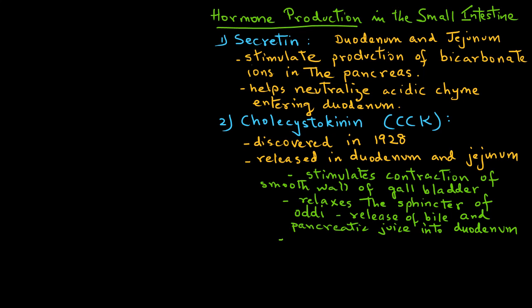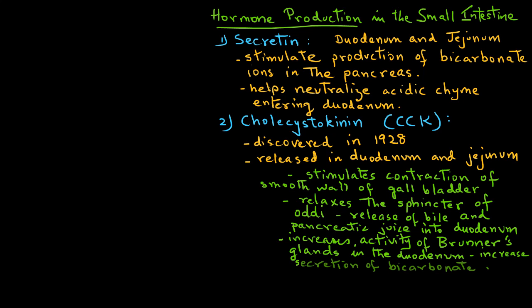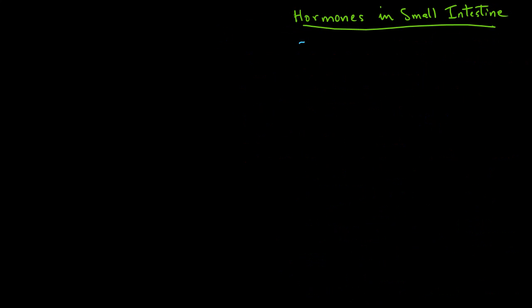This hormone increases the activity of Brunner's glands in the duodenum to increase secretion of bicarbonate ions. CCK stimulates the production of enzymes in the pancreas and also increases satiety by reducing hunger.